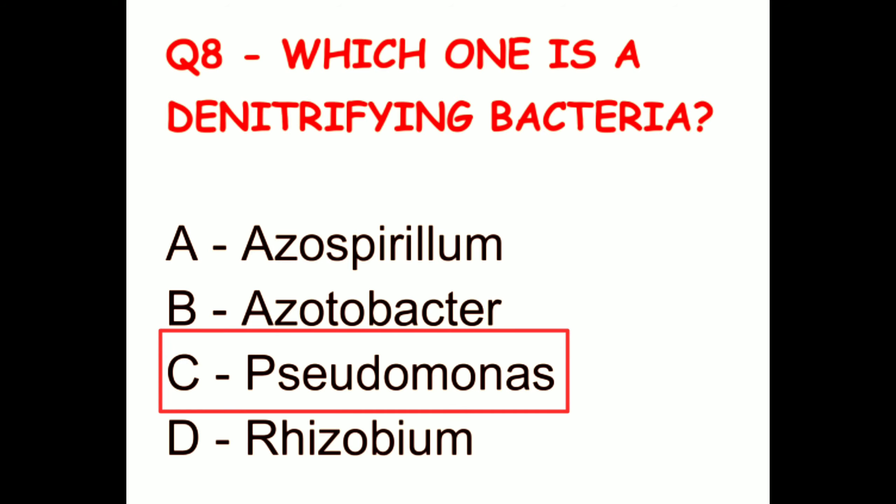Question 11. By which method can mass multiplication of plants be done? The options are cutting, grafting, budding, or tissue culture. The correct answer is tissue culture.